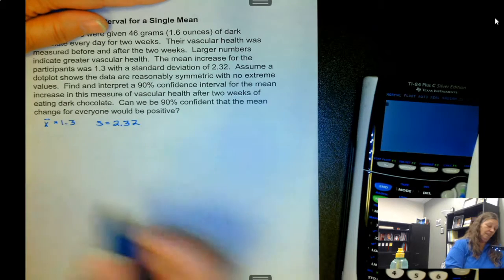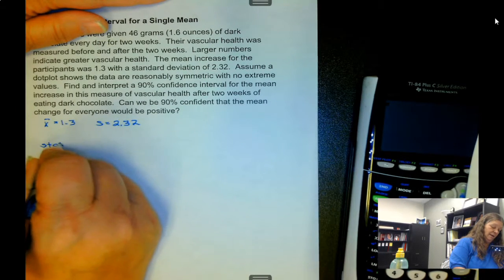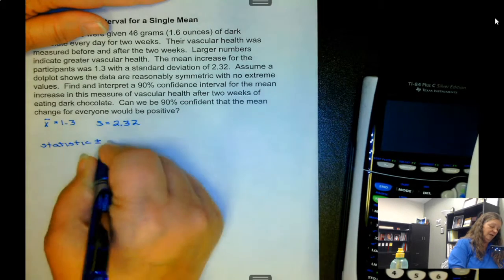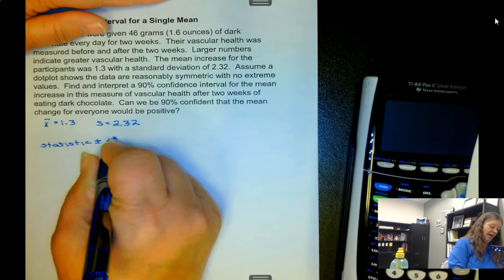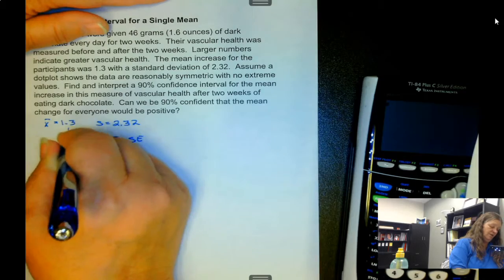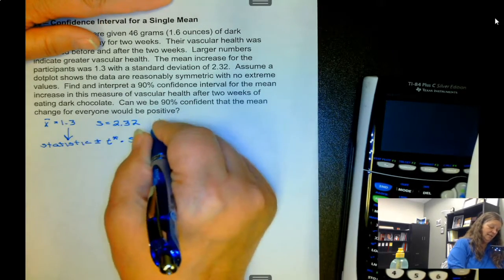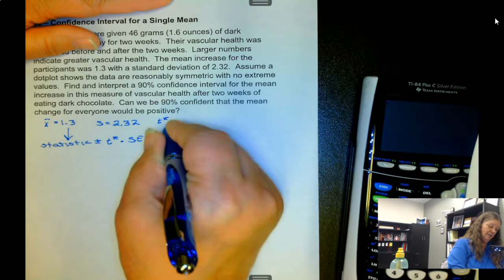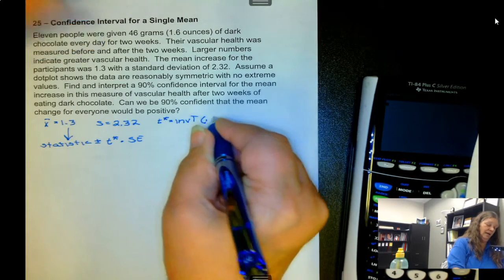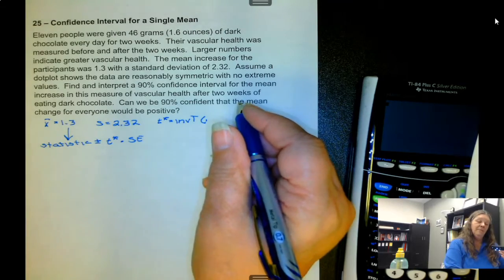Well it's statistic plus or minus, now we're using t-splat times standard error. Well 1.3 is the statistic so we have that. For t-splat it's empty and then the rest is the same as we had for the inverse norm, it's just that we have to include the degrees of freedom.